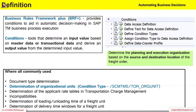We will take one simple example to understand how we could determine an organization unit based on source location or destination location. We will try to understand how we can use that so we are comfortable in our learning of this particular functionality. There are basically two areas: one is the front-end area and the back-end area.